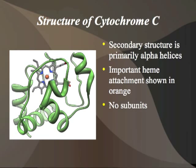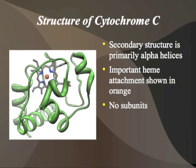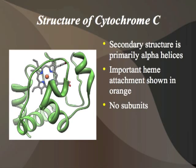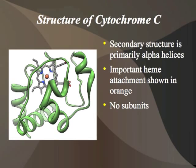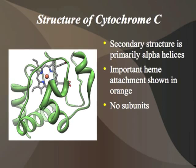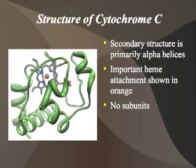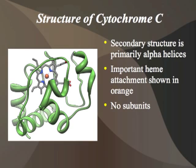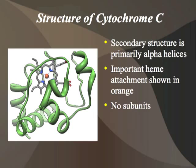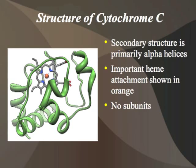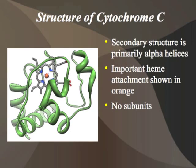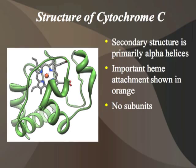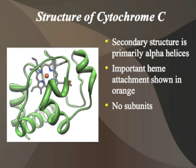The structure of cytochrome C is fairly simple in nature. It is a very short protein when coded from gene, and its secondary structure is made mostly of alpha helices, as you can see in the picture. The orange circle in this picture represents the heme attachment, specifically the iron of the heme attachment, which is used to carry electrons in the electron transport chain — one of the most vital roles of cytochrome C.